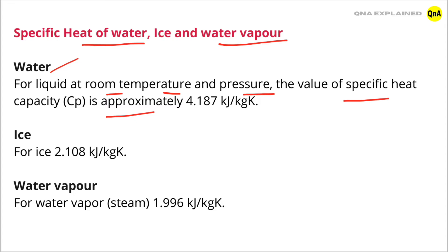For ice, the specific heat capacity is 2.108 kilojoules per kilogram per Kelvin. For water vapor — also called steam — the value is 1.996 kilojoules per kilogram per Kelvin.